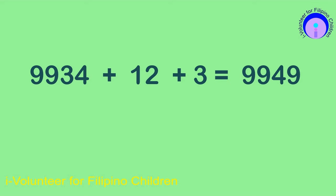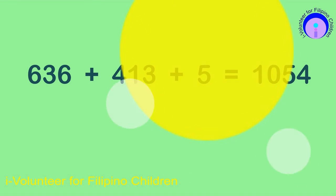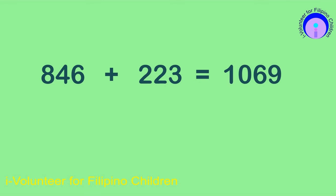9,934 plus 12 plus 3 is equal to 9,949. 636 plus 413 plus 5 is equal to 1,054. 846 plus 223 is equal to 1,069.